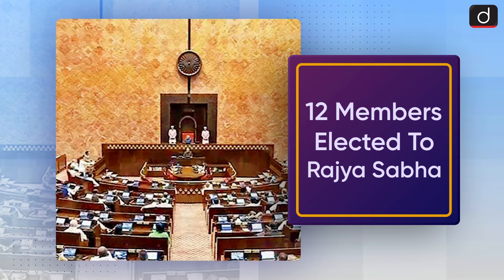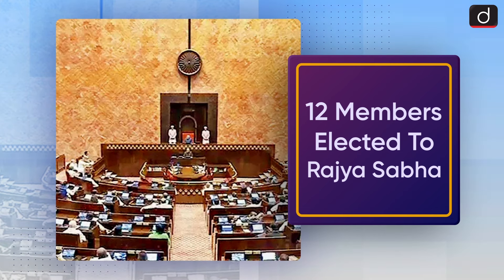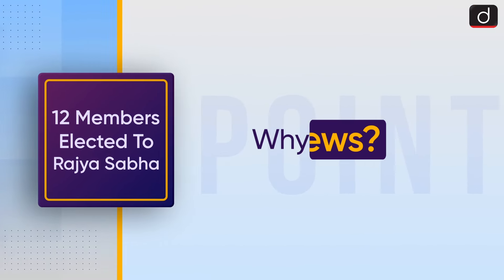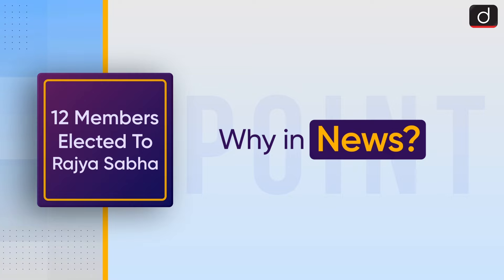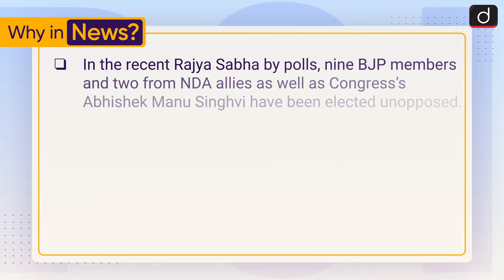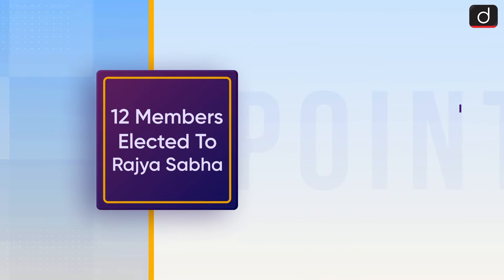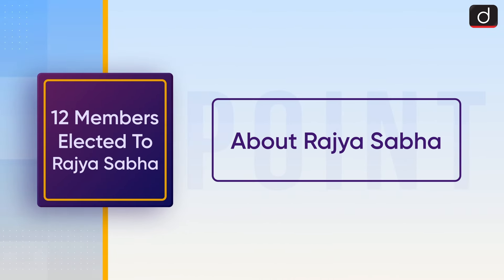Good morning everyone, welcome to another episode of 'To The Point'. Today's topic of discussion is 12 members elected to Rajya Sabha. First of all, let's see why it is in the news. In the recent Rajya Sabha by-polls, nine BJP members and two from NDA allies, as well as Congress's Abhishek Manu Singhvi, have been elected unopposed. Now let's discuss about Rajya Sabha.